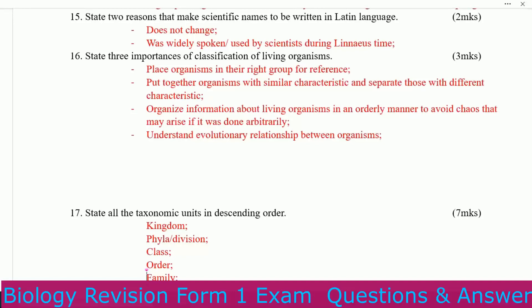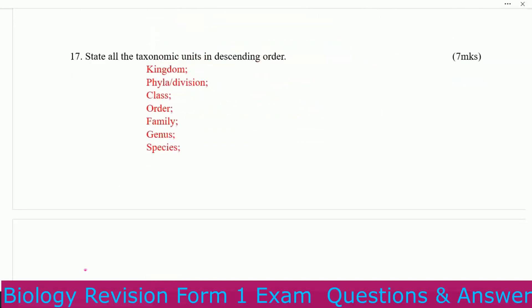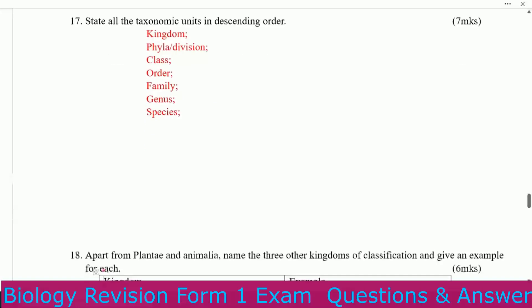Number four: to understand the evolutionary relationship between organisms. State all the taxonomic units in descending order. You have: Kingdom, Phylum or Division, Class, Order, Family, Genus, Species.